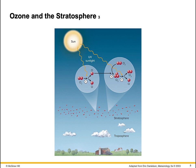UVA and UVB cause skin cancer and wrinkles after repeated long-term exposure. UV rays can even penetrate your clothing. An SPF 15 lotion blocks out about 92% of the UV that reaches Earth's surface.